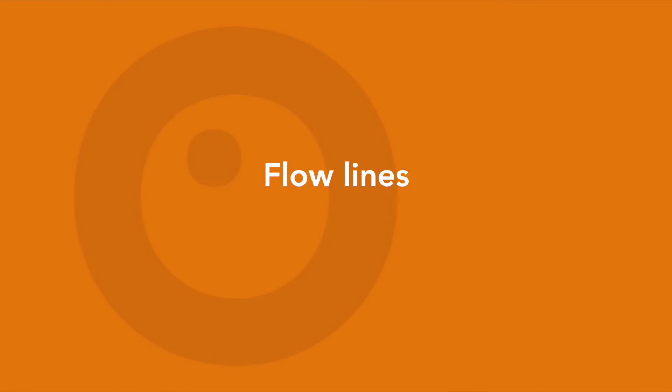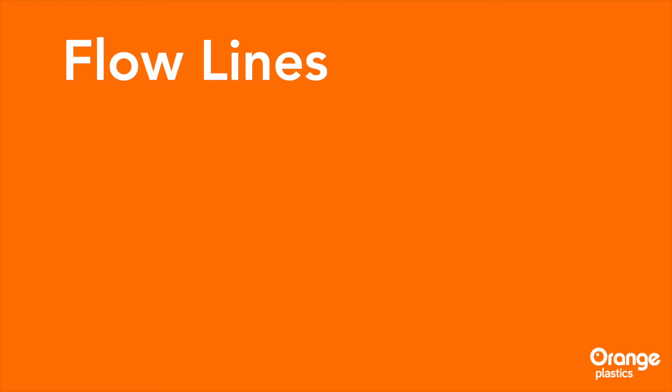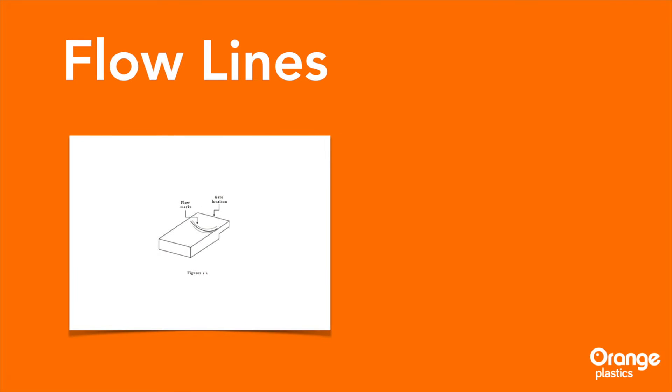Flow Lines. Flow lines appear as a wavy pattern, often of a slightly different color than the surrounding area, and generally in a narrow section of the molded component. Flow lines won't typically impact the integrity of the component, but can be undesirable from an aesthetic point of view.